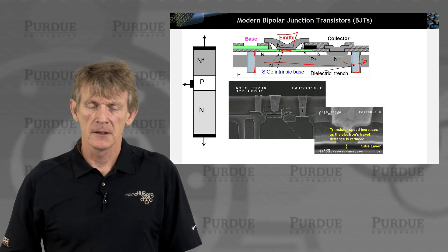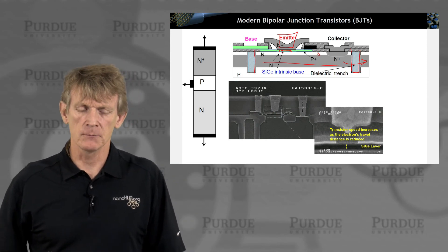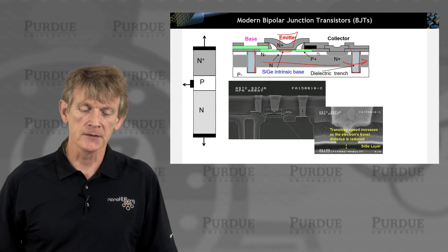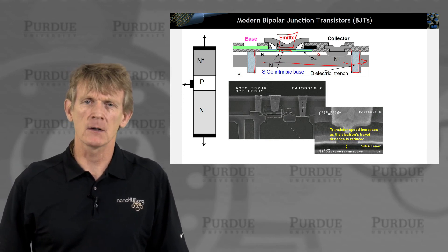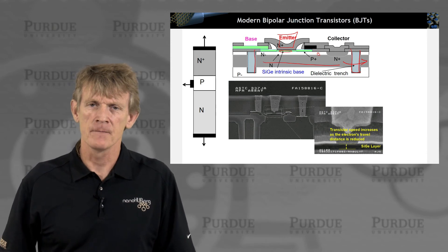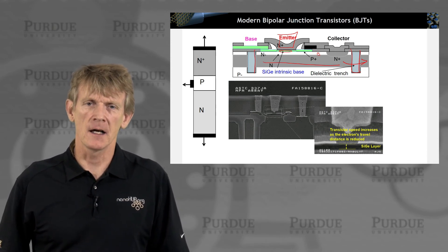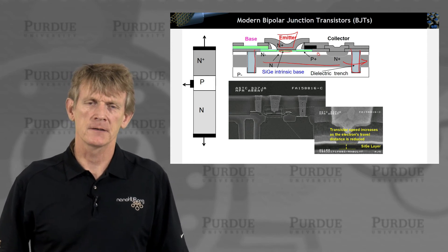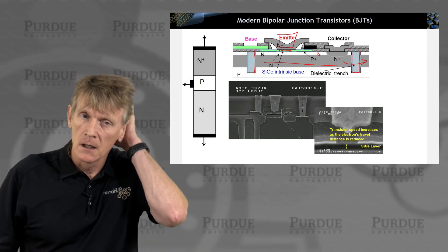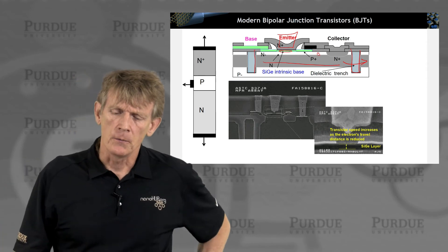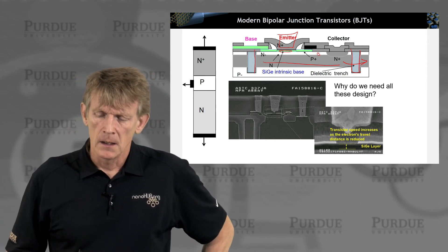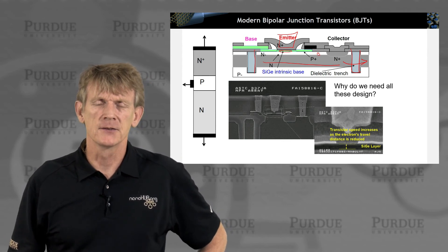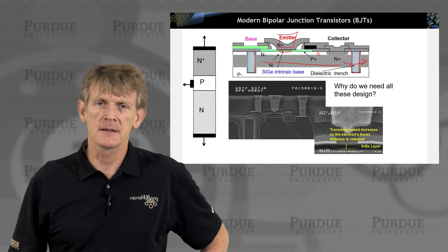If you look at SEM images, you can begin to identify some of these features on the sketch. The point is these are realistic devices that we're talking about — they're still in use very much today, typically for antenna applications where you need high gain to connect to radio signals going in and out of your cell phone. So the question is, why do we have to have all this complicated structure? We'll step through that in the next section, but let's start with some fundamentals first on how this stuff works.